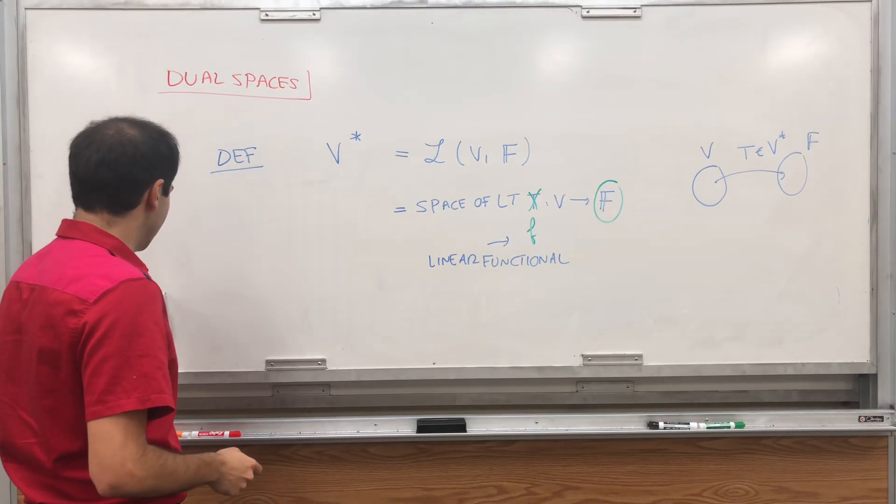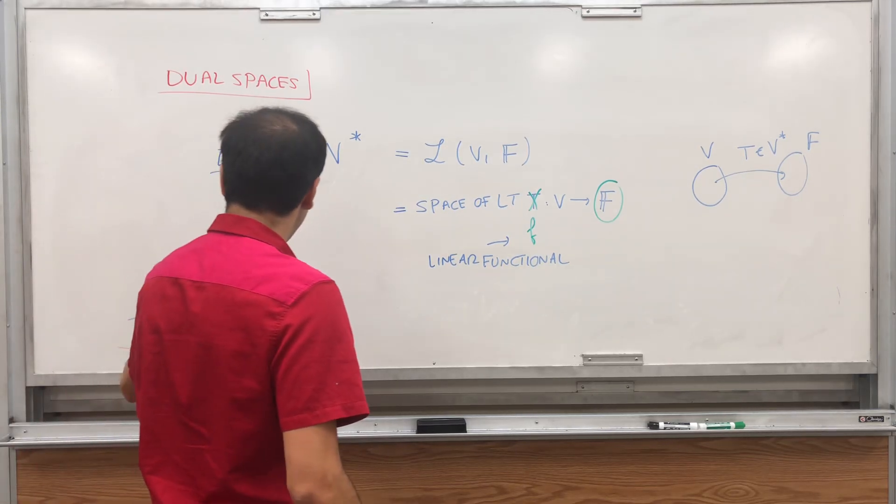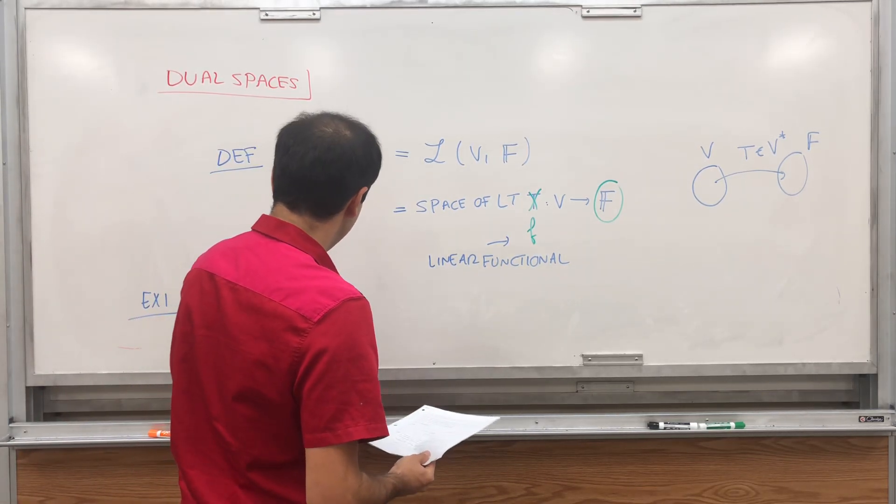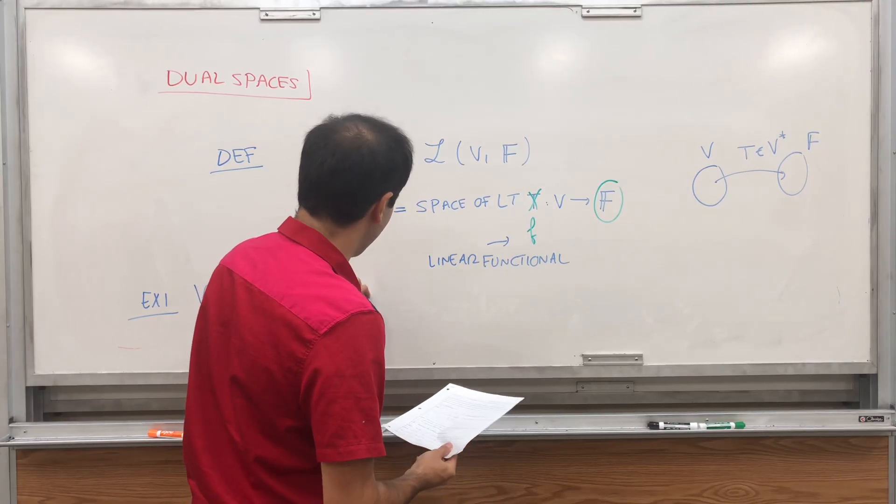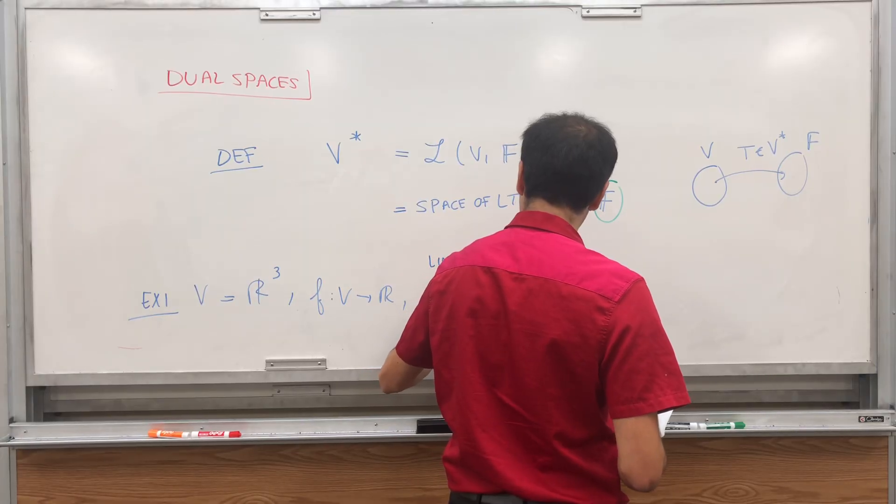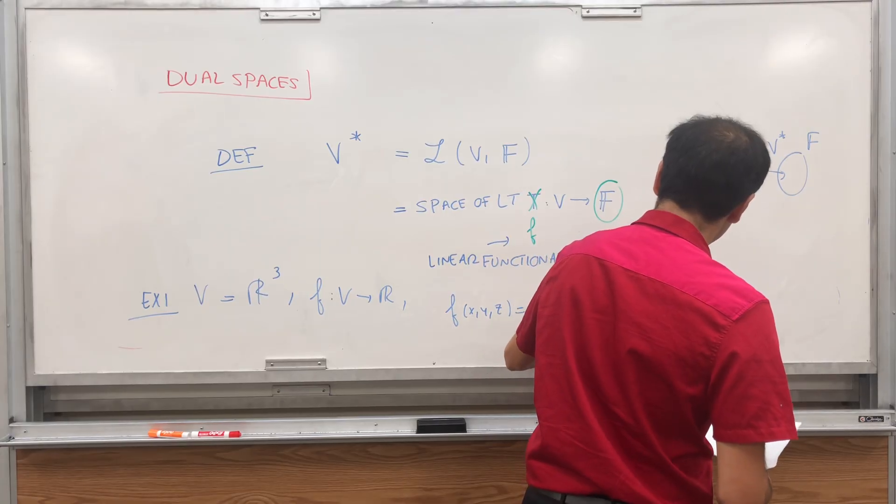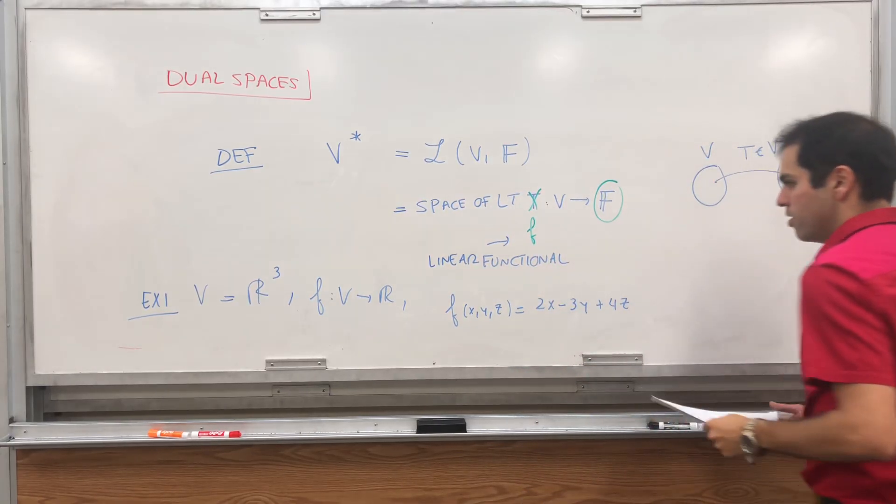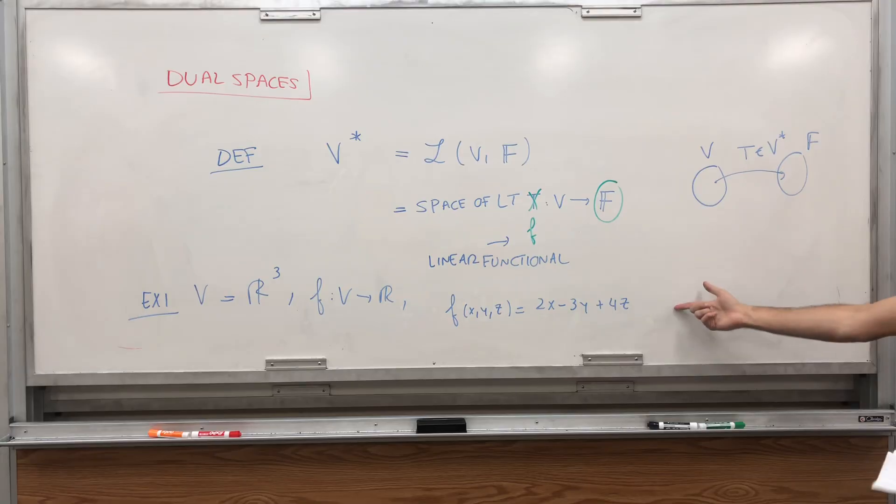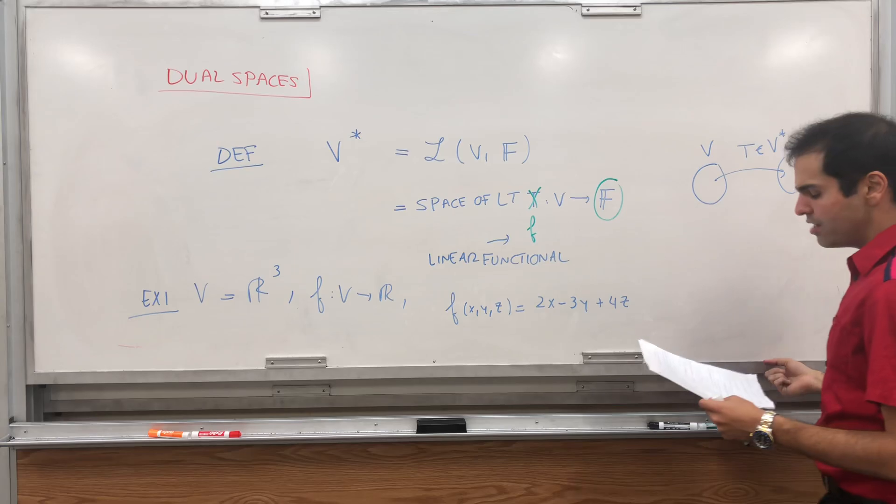So here's the first example of a linear functional. Let's suppose we have V being R³ and define F from V to R. Simply, F of x, y, z is 2x minus 3y plus 4z. Well, look, it is a linear transformation. And moreover, it maps to the real numbers. So in this case, it is a linear functional. So this works.